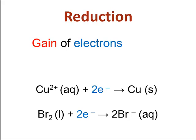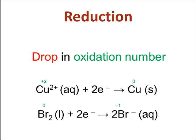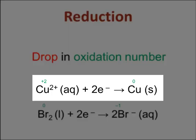Reduction is the gain of electrons, which is associated with a drop in oxidation number. The copper ion here is changed to copper atom. Oxidation number changes from plus two, the charge is two plus, the oxidation number plus two, and it's dropped to zero in the copper metal.